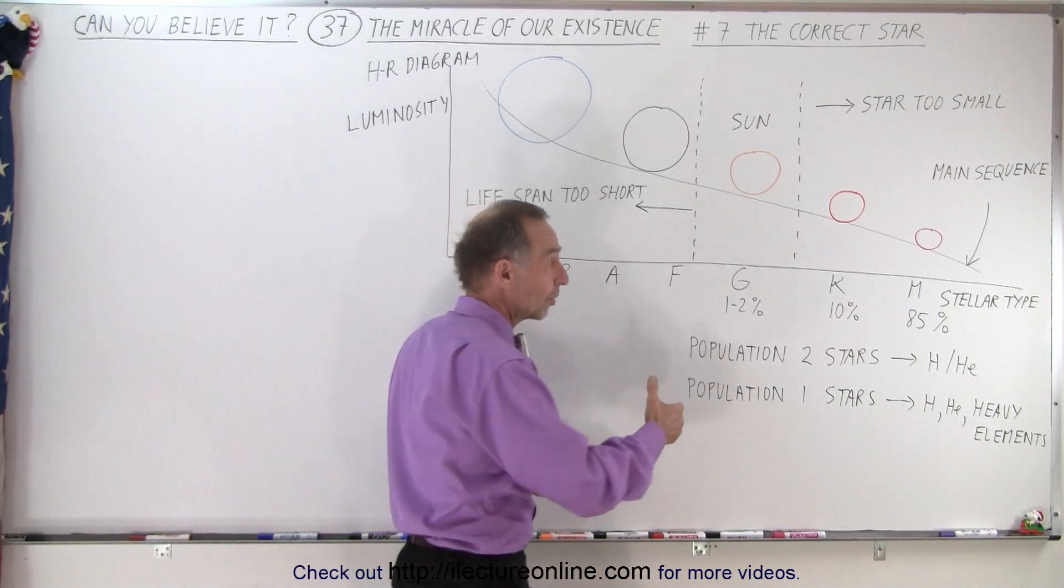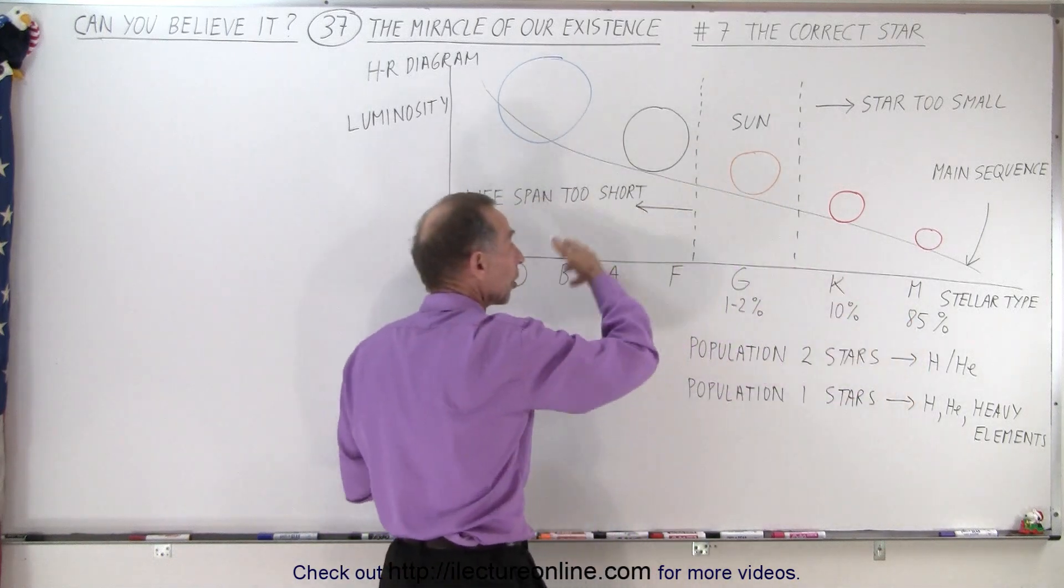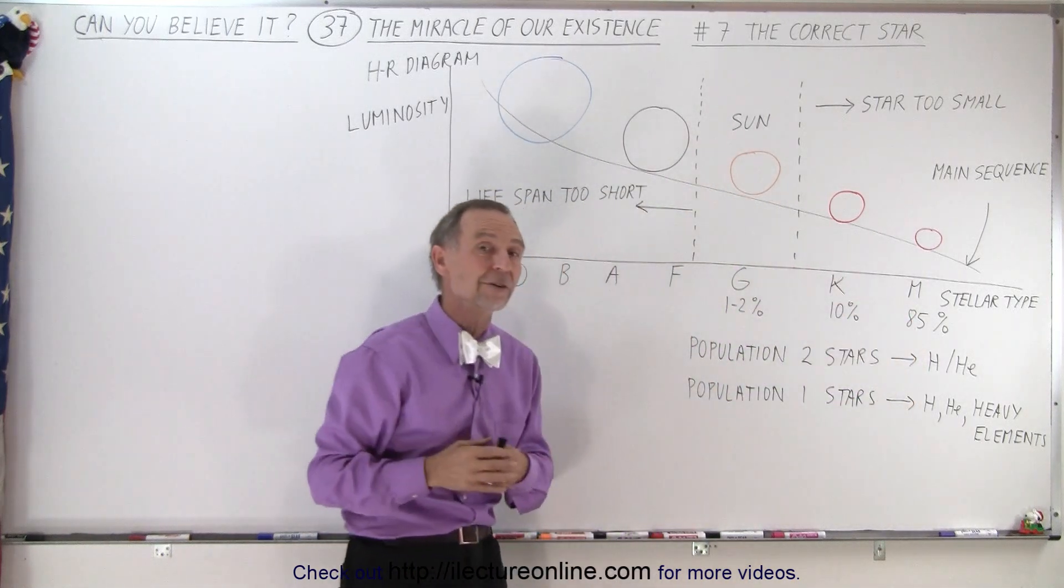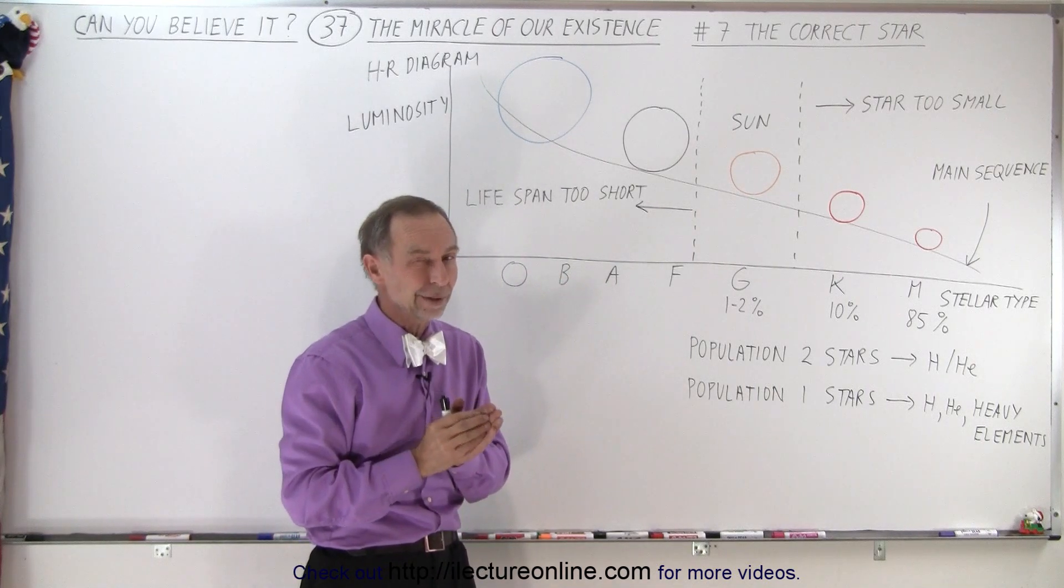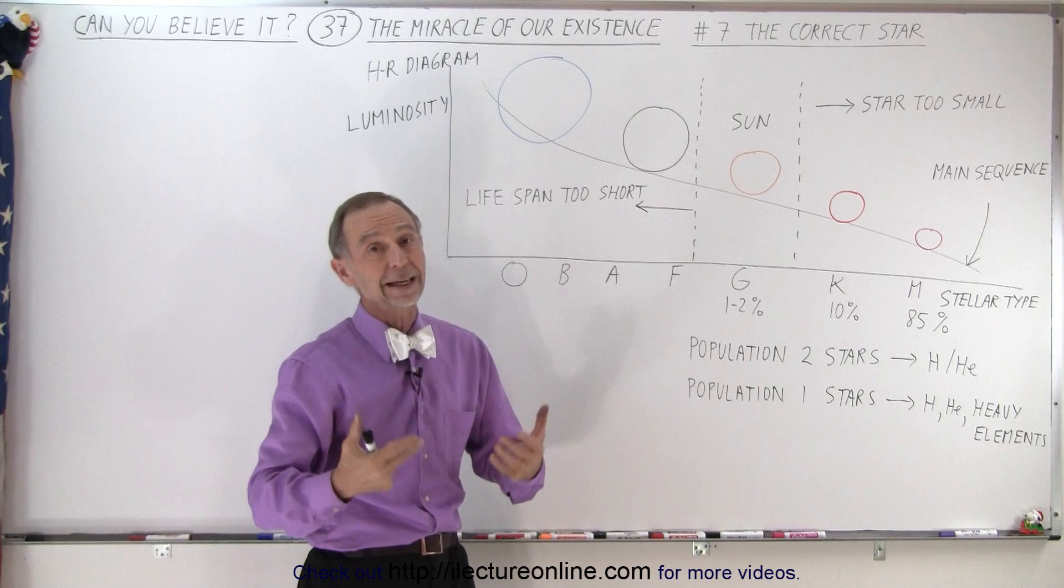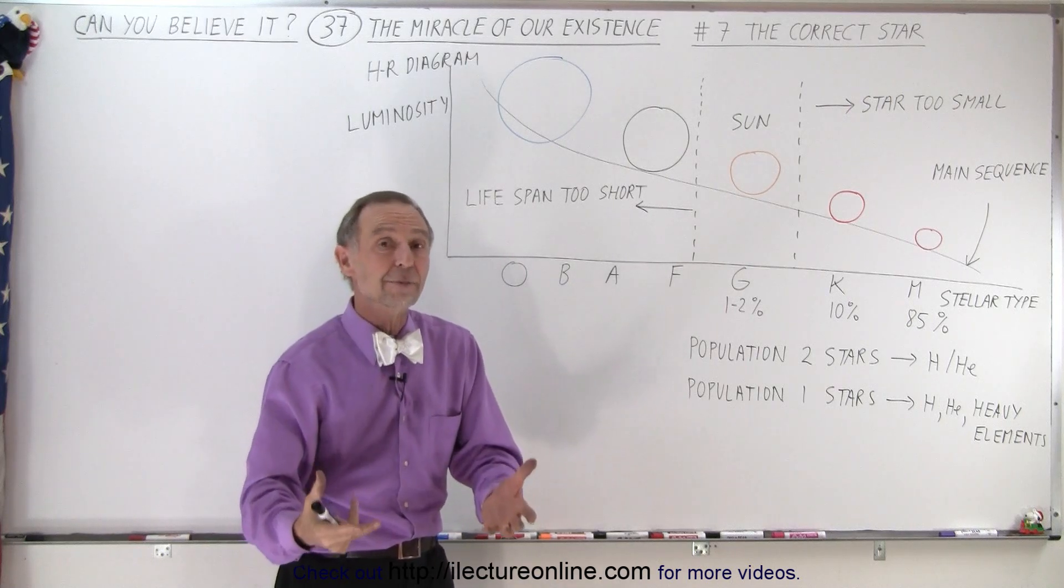So either the star is too small or the star is too large, which makes it very unlikely for life to exist. And then when the star is just the right size, well, there's not that many of them. That's again the star you want to pick for life to be able to exist.